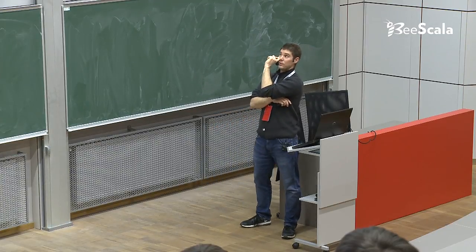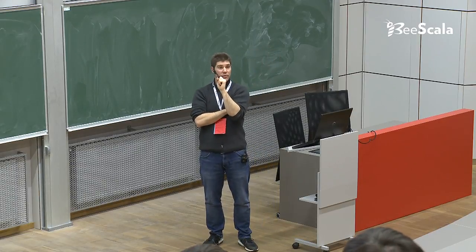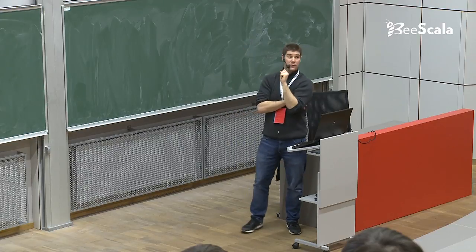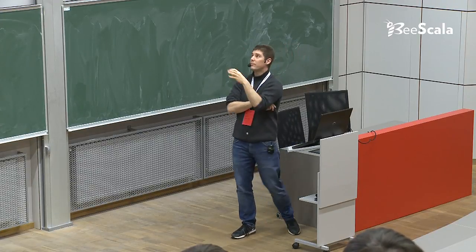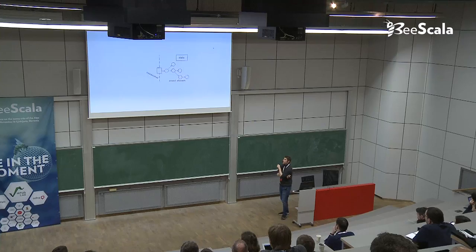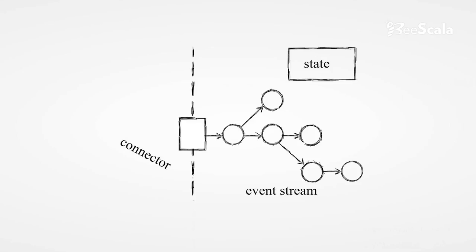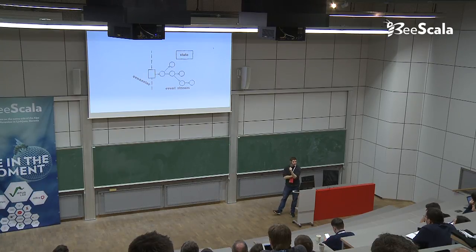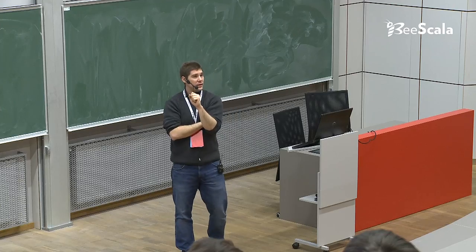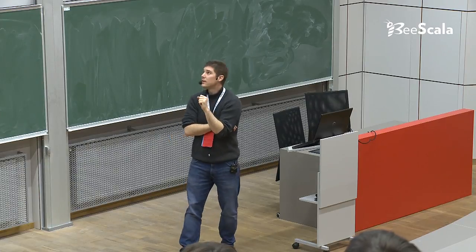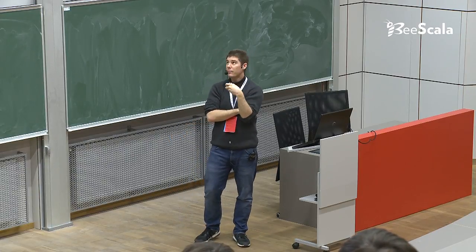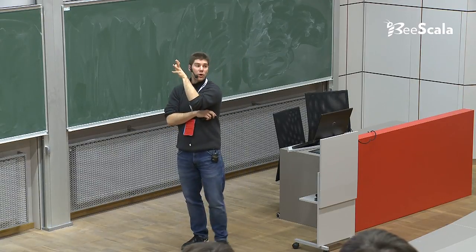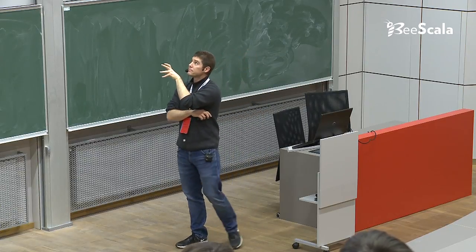The way reactors communicate in the reactor model is through an entity called the channel. The channel is typed — you put the type in square brackets after it. On this channel you can send events, which are objects or pieces of information, to the owner of the channel. There's only one owner but many potential writers. The channel's boundary is called a connector — an entry point connecting the outside world to an event stream inside the reactor.